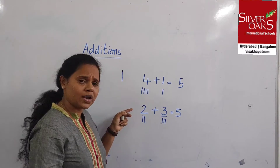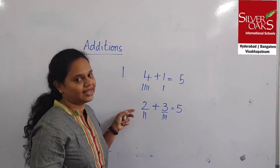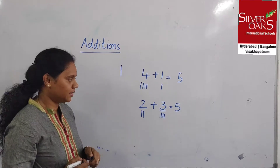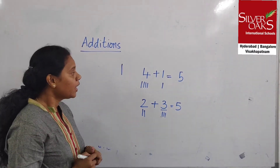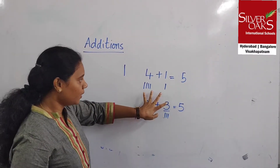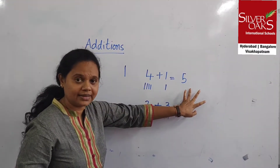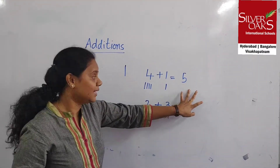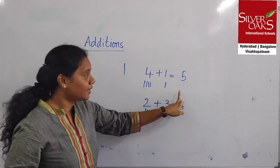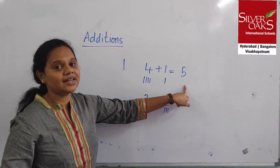Did you understand how to do additions by drawing lines? Yes. So one more important thing — these are in a sleeping line. These are called horizontal additions.